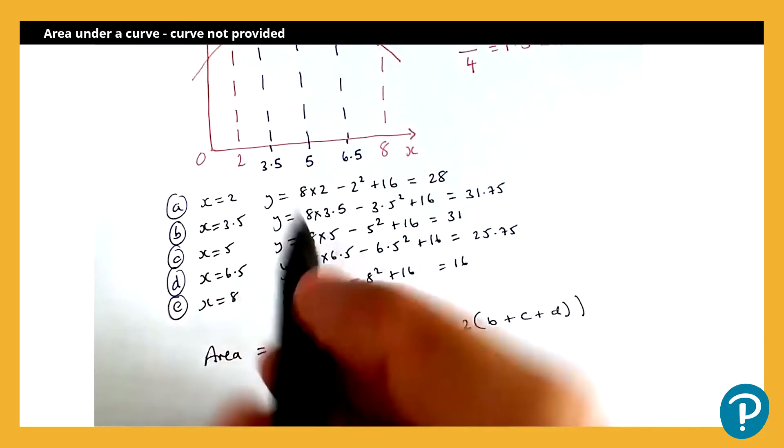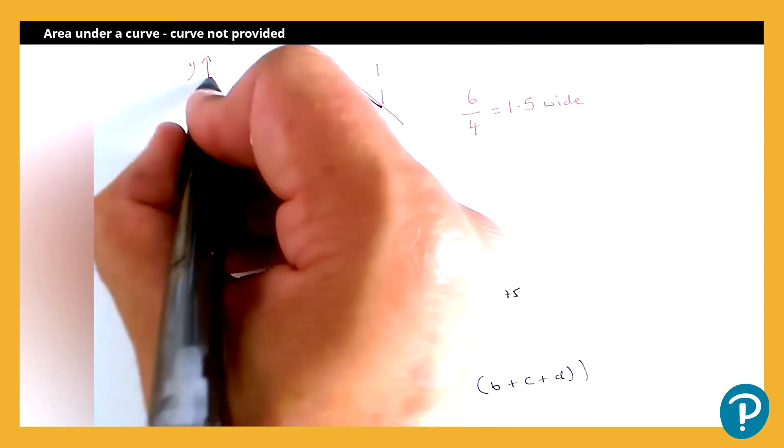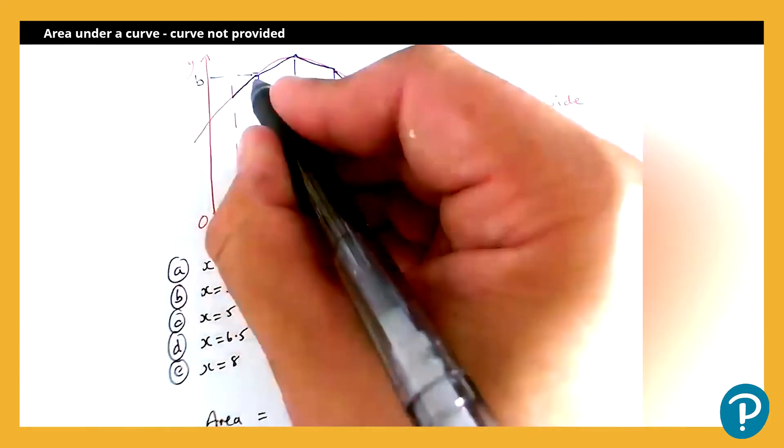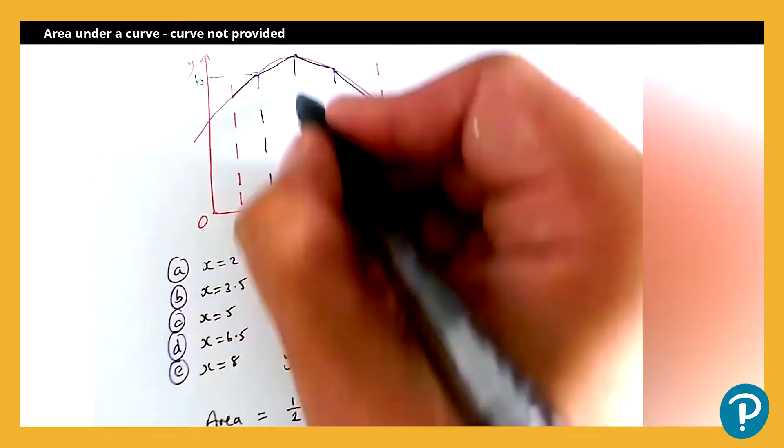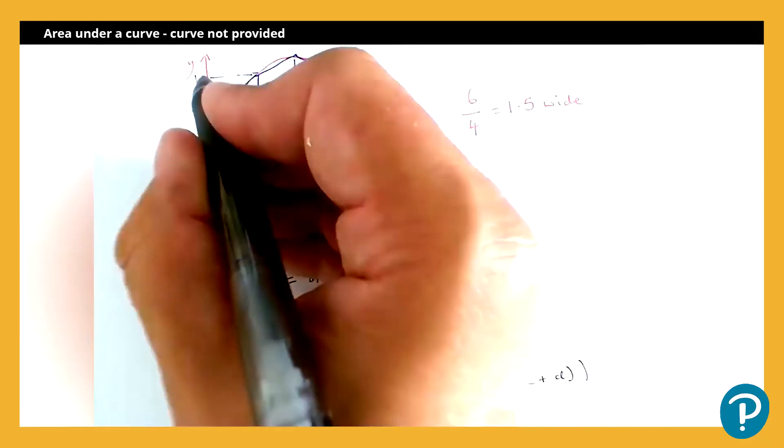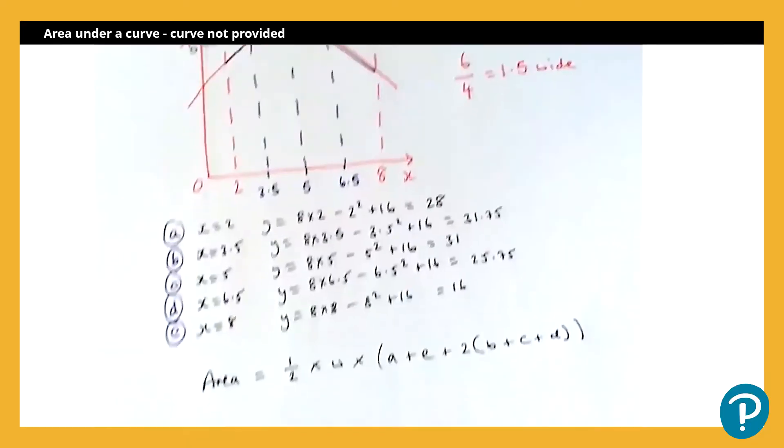Now, the reason it's two of these is because the value, if we look at the value here, this is the value we worked out for b, that value is in this trapezium, but it's also in the second trapezium as well. And likewise, this value, which we read off here for c, is in the second strip and also in the third and so on.